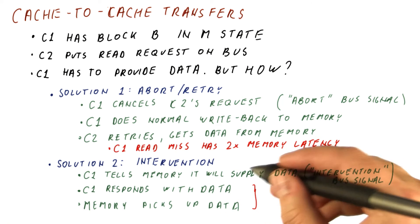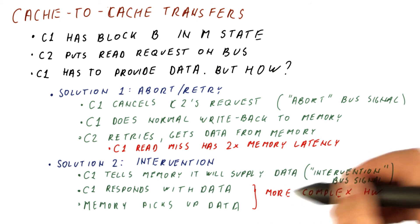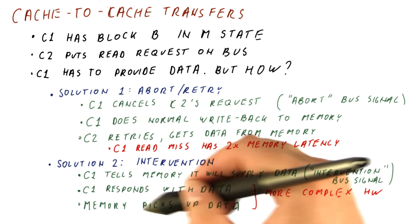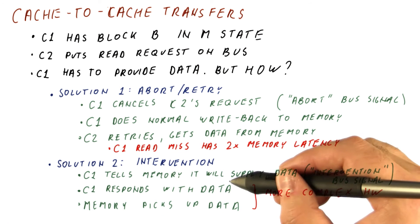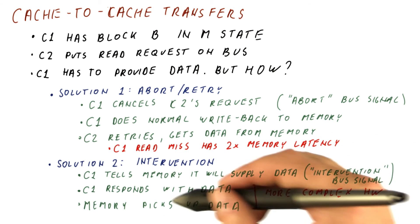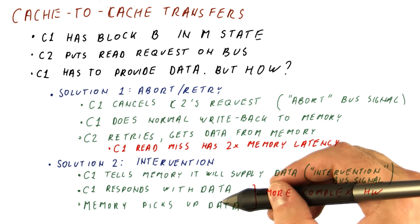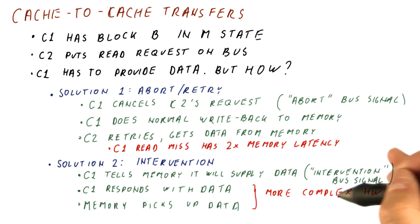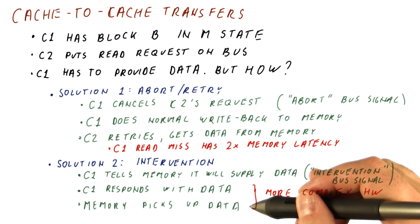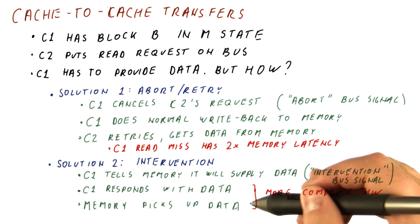So the disadvantage of this approach is that it needs more complex hardware. Now a cache needs to be able to kind of insert its data into what would normally be the memory sending data, and also the memory has to have enough intelligence to pick up the data when a core is responding to an intervention request instead of just picking up the data when there is a write-back request.